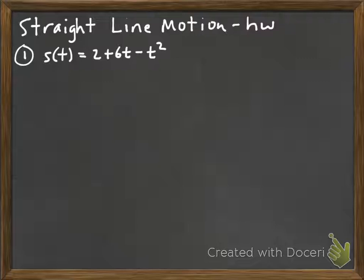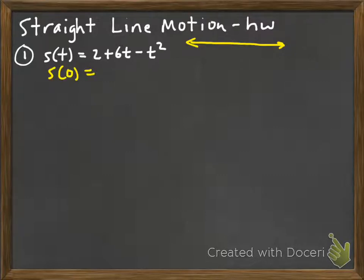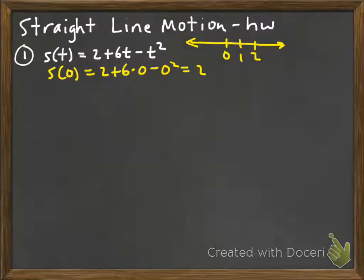The first thing we want to figure out is what's going on with this particle — it's moving left and right along a horizontal line. At time t=0, the position is 2 plus 6 times 0 minus 0 squared, so the position at time 0 is 2. If we look at a number line, this particle is right there at 2 when t equals 0.